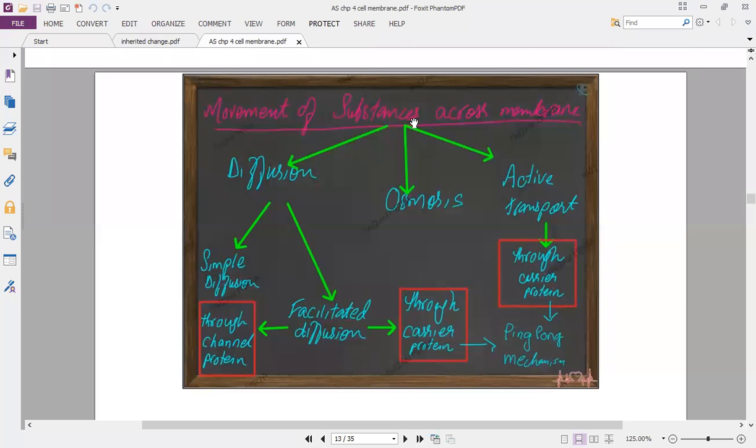So if you summarize, the movement of substance across the membrane could either be by diffusion, osmosis, or active transport. Osmosis deals with water moving down the water potential gradient. Diffusion can be either simple diffusion or facilitated diffusion. Facilitated diffusion could be either through the channel protein or a carrier protein, whereas active transport is against the concentration gradient and will always be through the carrier protein.